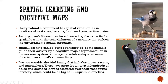We have the example of the blue jay, which is a corvid — belonging to the crow family, which includes crows, ravens, and nutcrackers. These jays store their food items in hundreds of holes and cracks in trees throughout the year, and they defend their territory, which may extend to more than one square kilometer.